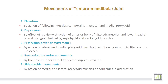Movements of the temporomandibular joint: number one, elevation by action of the temporalis, masseter, and medial pterygoid muscles. Depression by the effect of gravity with action of the anterior belly of the digastric muscle and the lower head of the lateral pterygoid, helped by the mylohyoid and geniohyoid muscles.